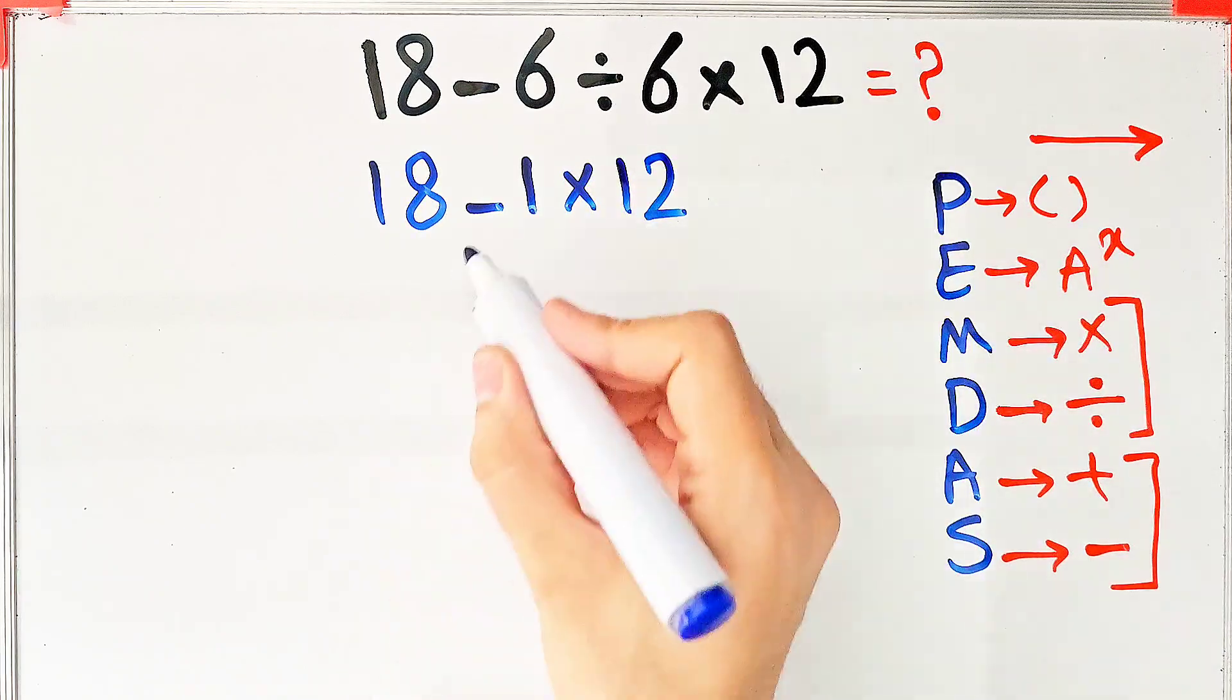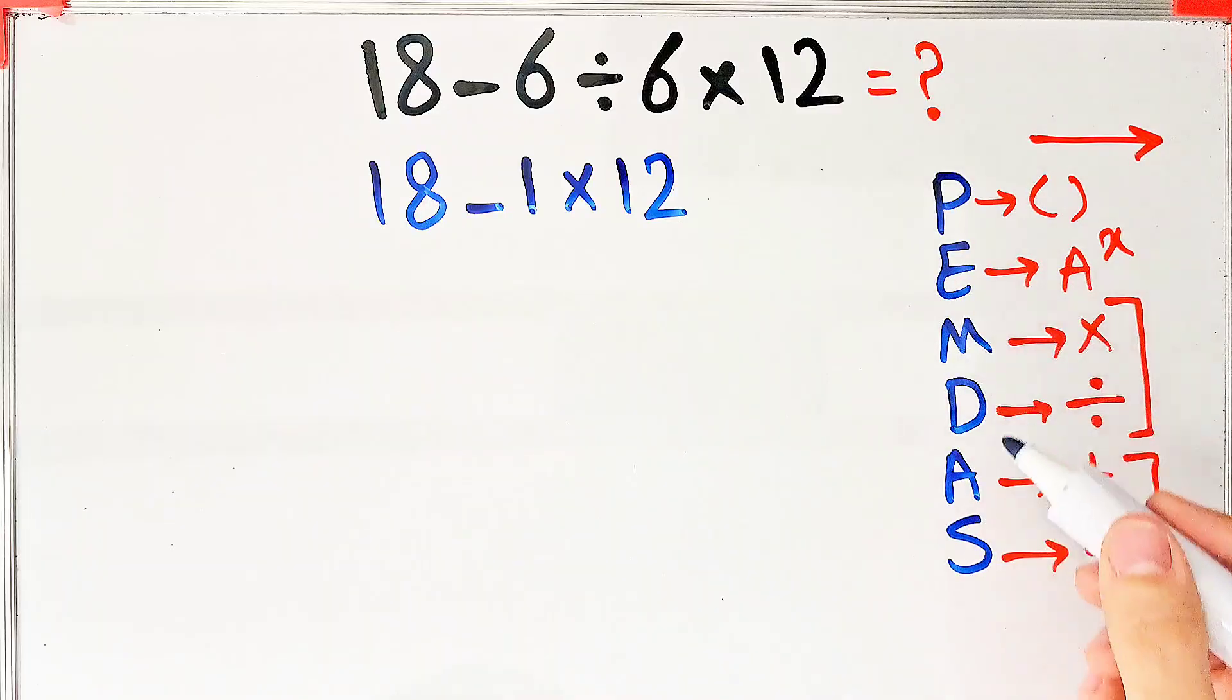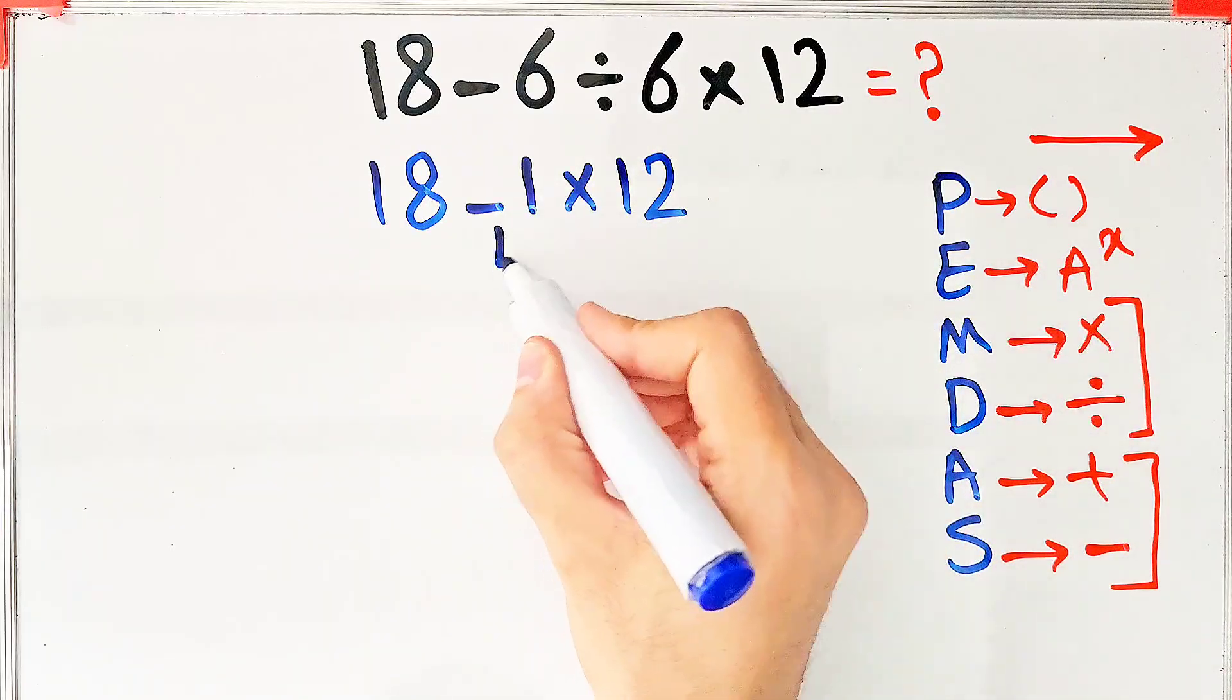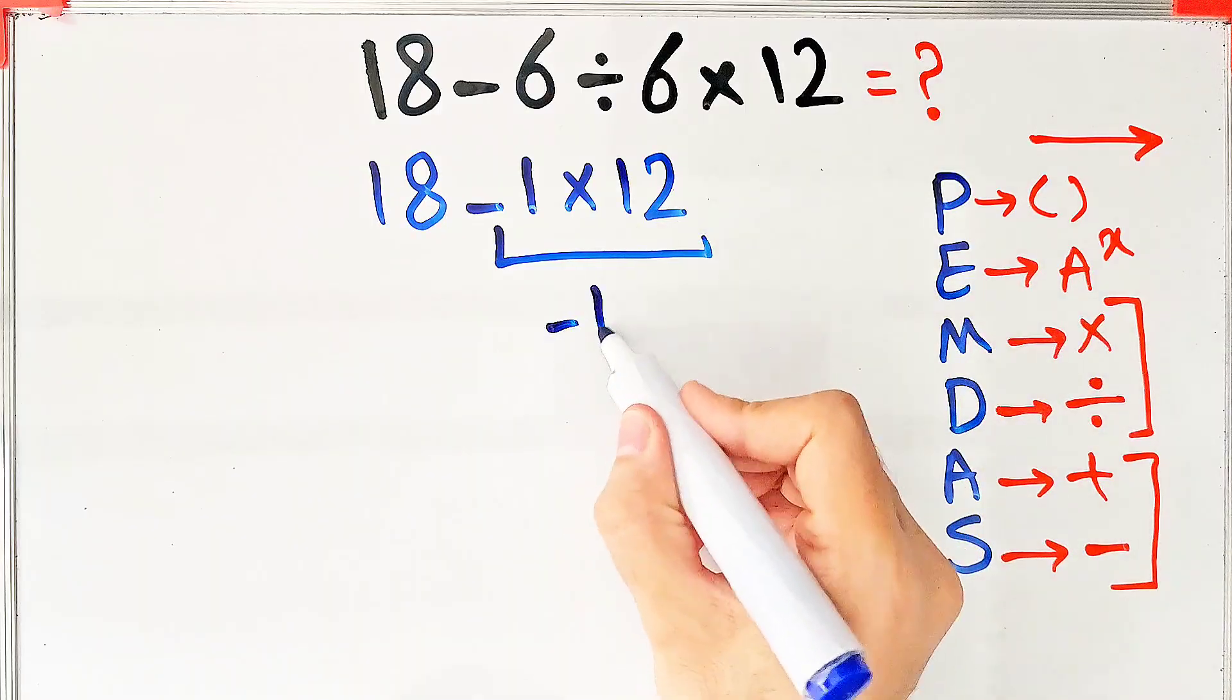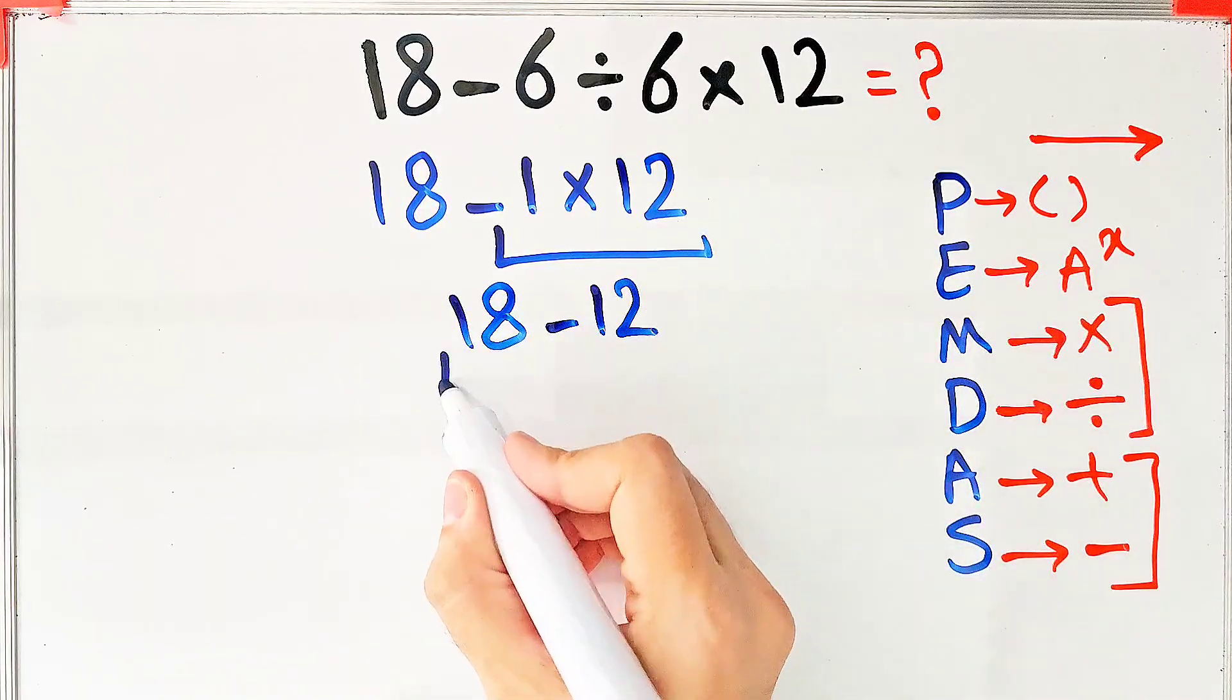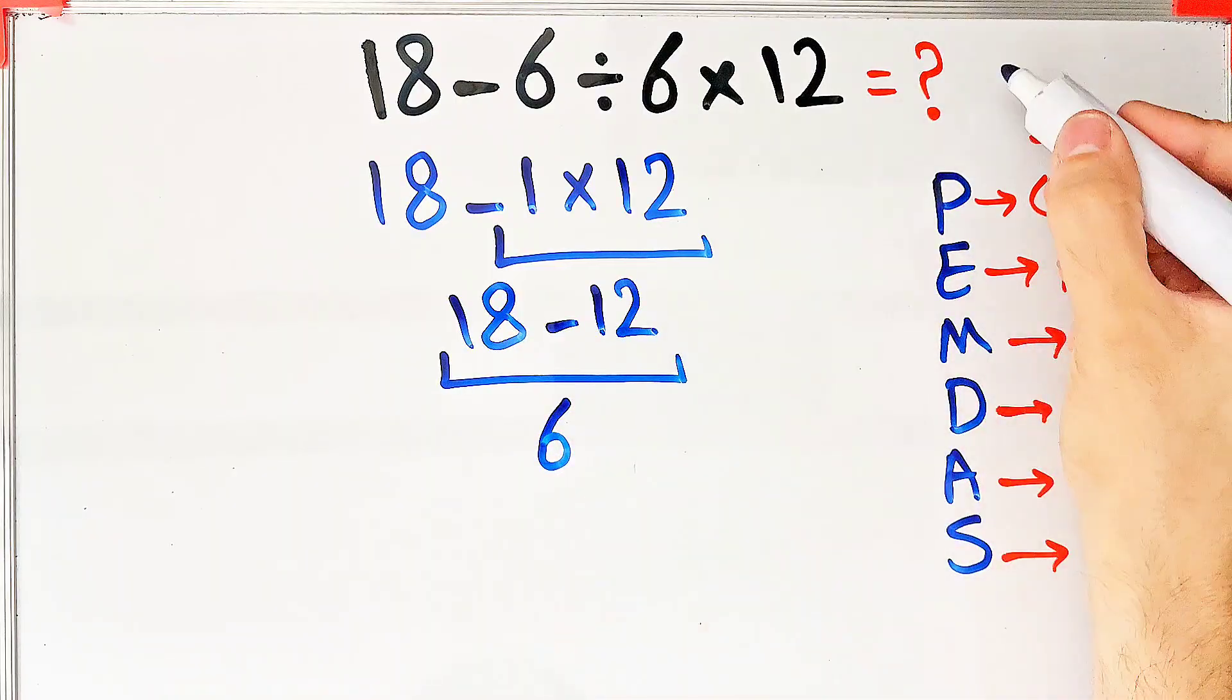Now we have subtraction and multiplication. Multiplication has higher priority than subtraction. So first, we do this multiplication. Negative 1 times 12 equals negative 12. Now we have 18 minus 12 and 18 minus 12 equals 6. The final answer of this question equals 6.